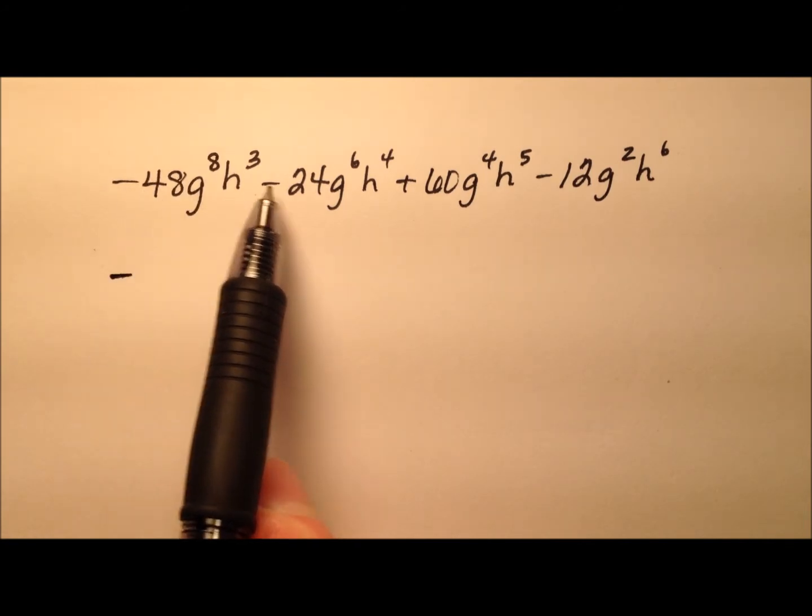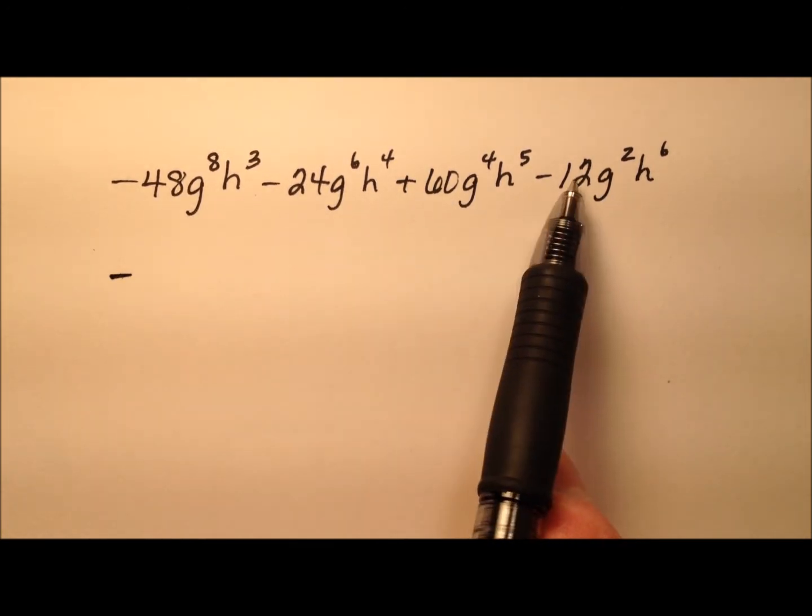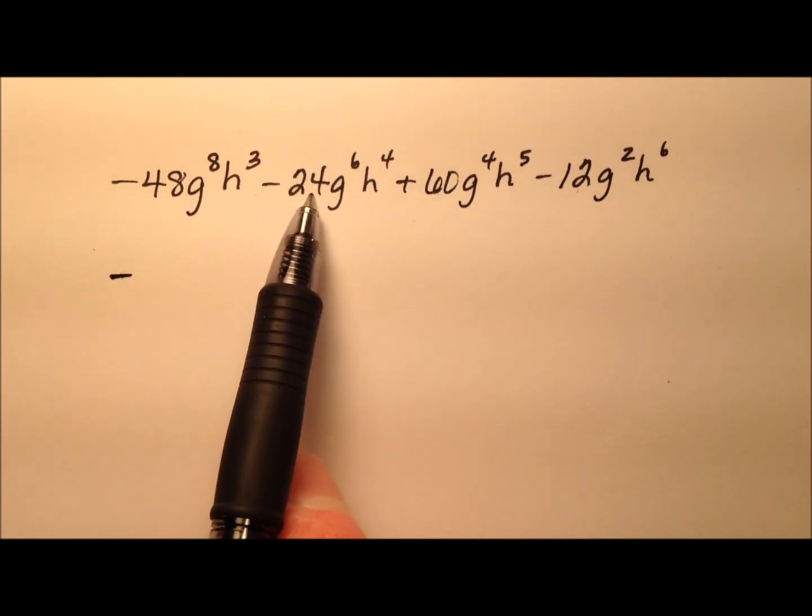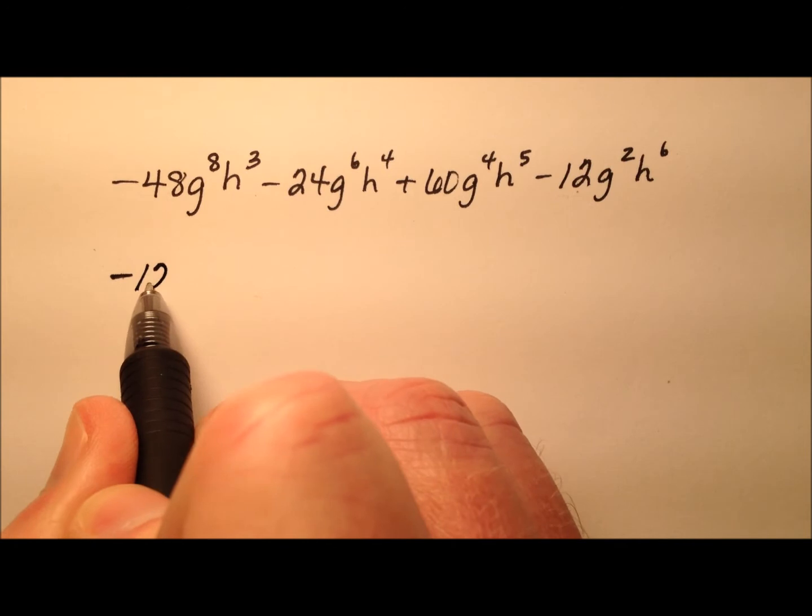Let's look at the numbers next: 48, 24, 60, and 12. 12 is the smallest of these numbers, and I wonder if 12 will divide all of these evenly. 12 times 4, 12 times 2, 12 times 5, yeah. So I can factor out a negative 12.